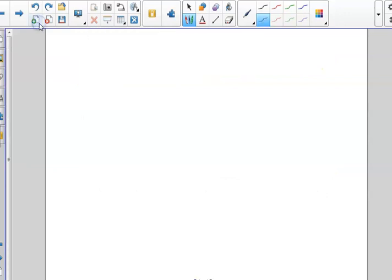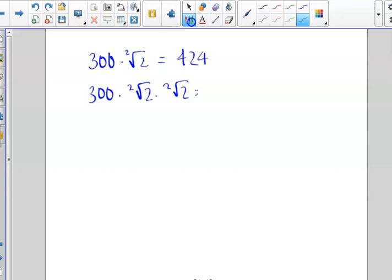So what I'm going to do just on a separate page is I'm just going to write out, so we started with 300 times the square root of two, and then we did 300, and of course the index is two times the square root of two, times the square root of two, so 300 times the square root of two gave us that 424.26 bacteria, and then when we multiplied that by itself twice,